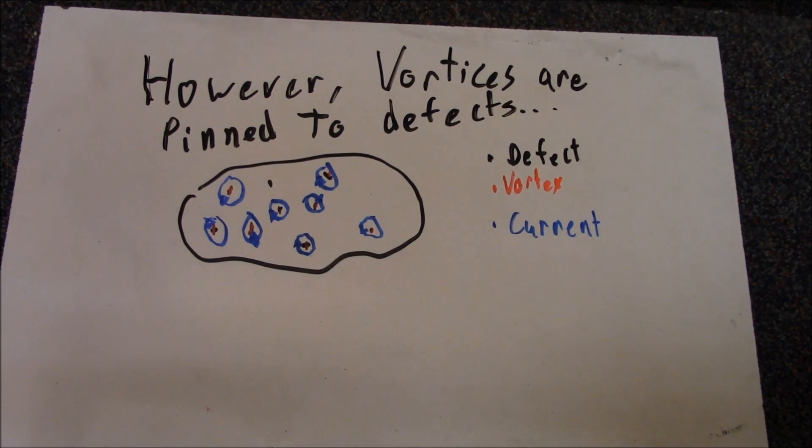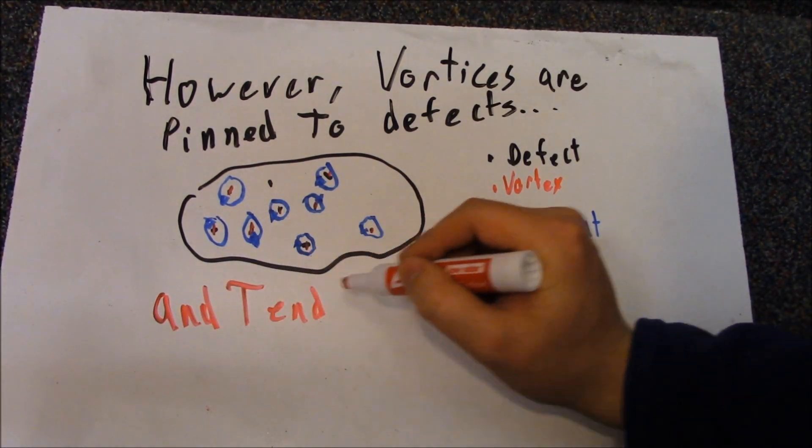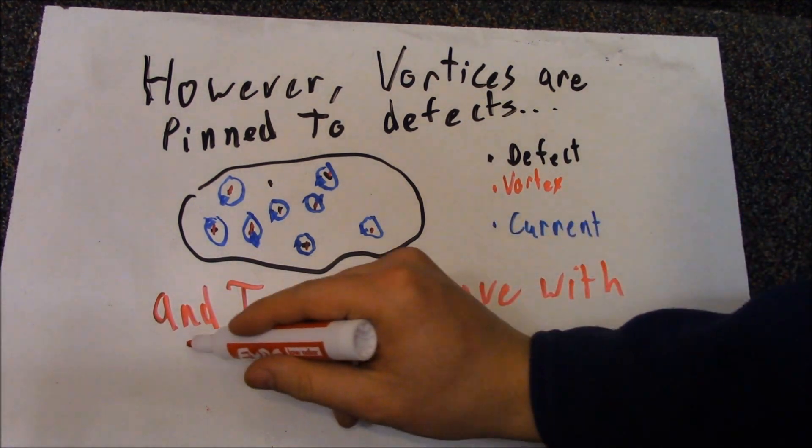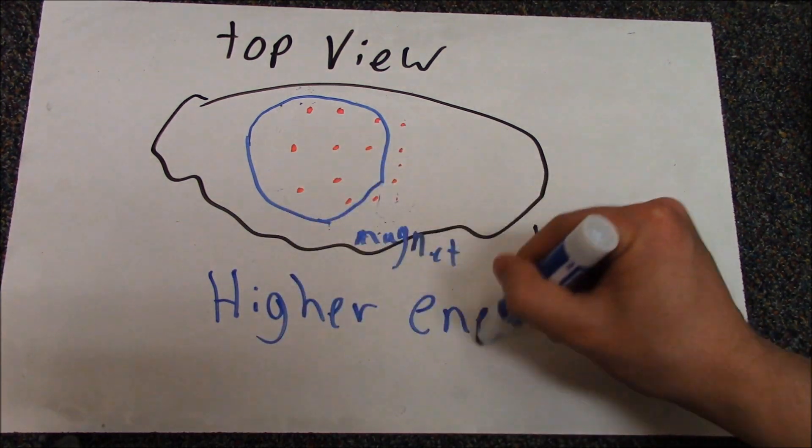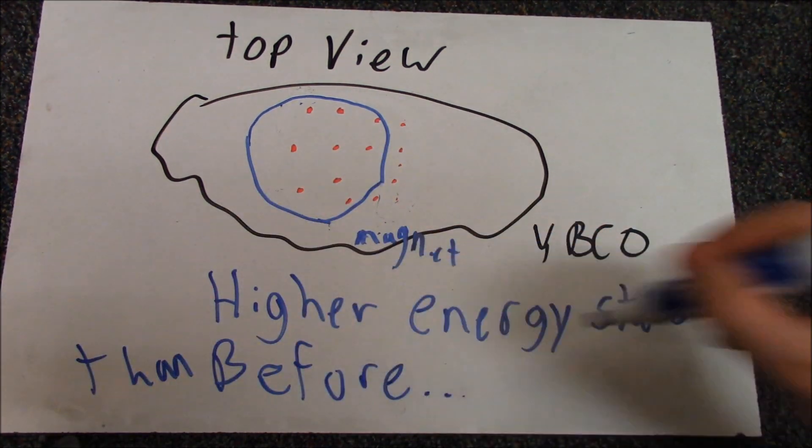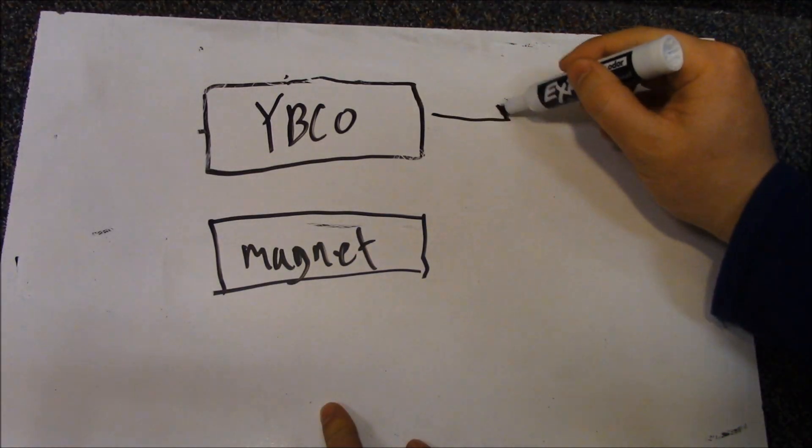This means that unless vortex pinning is broken, the vortices move with the superconducting puck. What consequences does this have? Moving the superconductor with respect to the magnet will increase the energy of the system. In short, the superconductor is locked to the magnet.